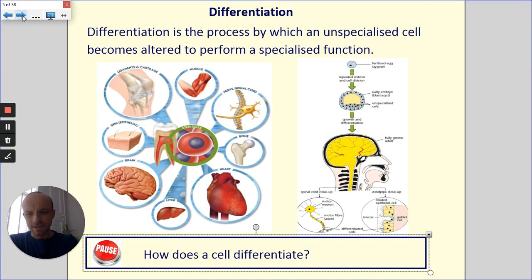So what is differentiation? Well, it's the process of an unspecialized cell or a stem cell becoming, changing into a specialized cell of some type. So the process of the cell becoming specialized is called differentiation.